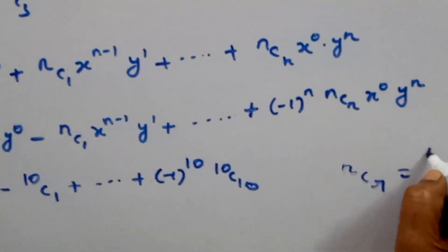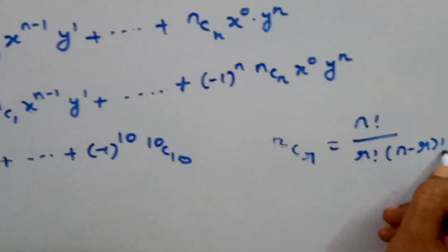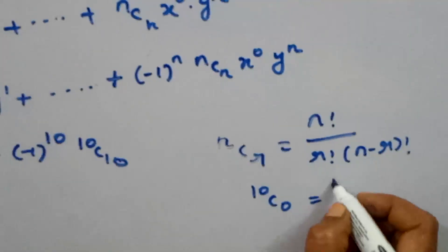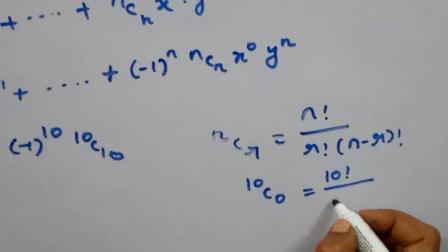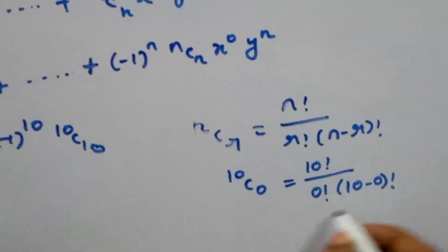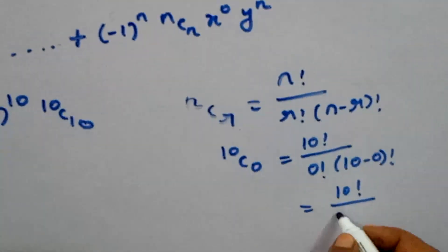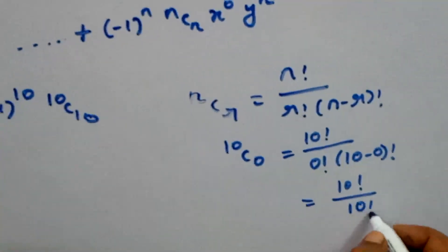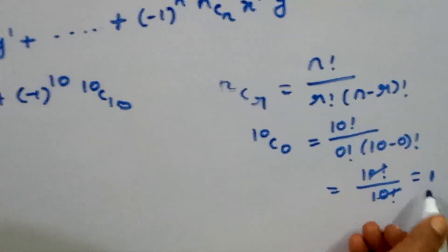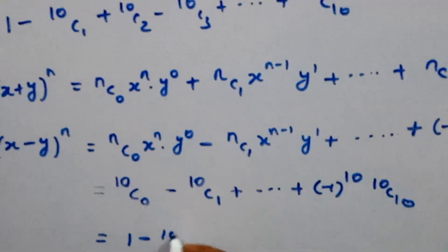The formula ncr equals n factorial divided by r factorial times n minus r factorial. For 10c0: 10 factorial divided by 0 factorial times 10 minus 0 factorial. Since 0 factorial equals 1, the numerator 10 factorial cancels with denominator 10 factorial, giving 10c0 equals 1.